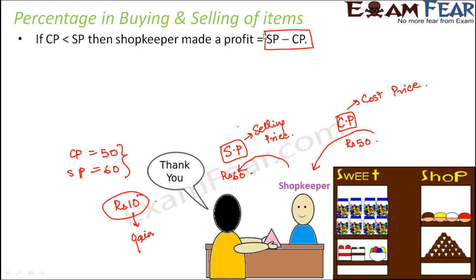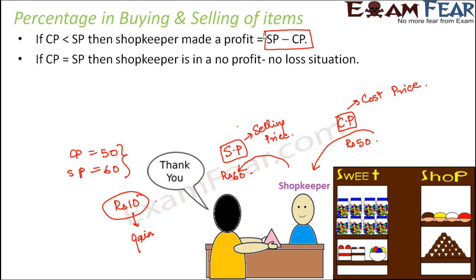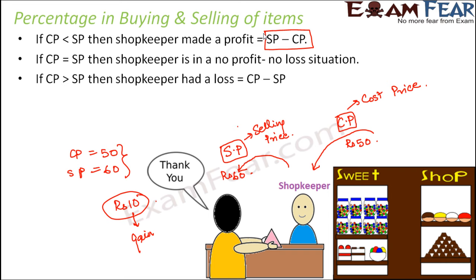Now if the cost price and the selling price are equal — say the shopkeeper purchases the book for rupees 50 and also sells it for rupees 50 — there is no profit because SP minus CP equals zero, so there is no profit, no loss. Whereas if the cost price is greater than the selling price, say the shopkeeper bought for rupees 50 and sold for rupees 40, he incurred a loss. The loss is given by CP minus SP.